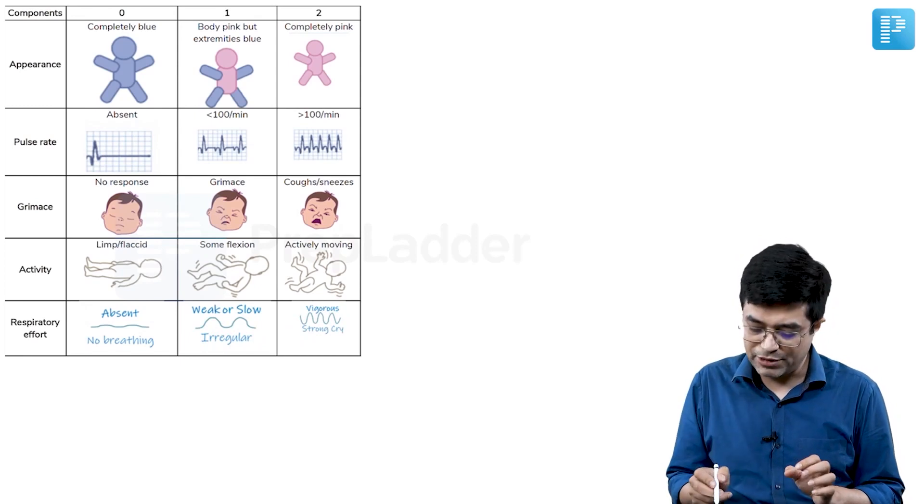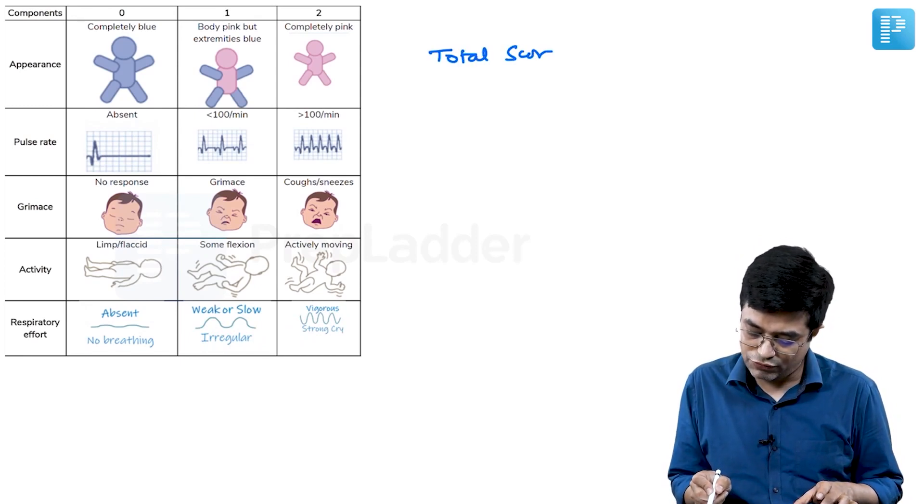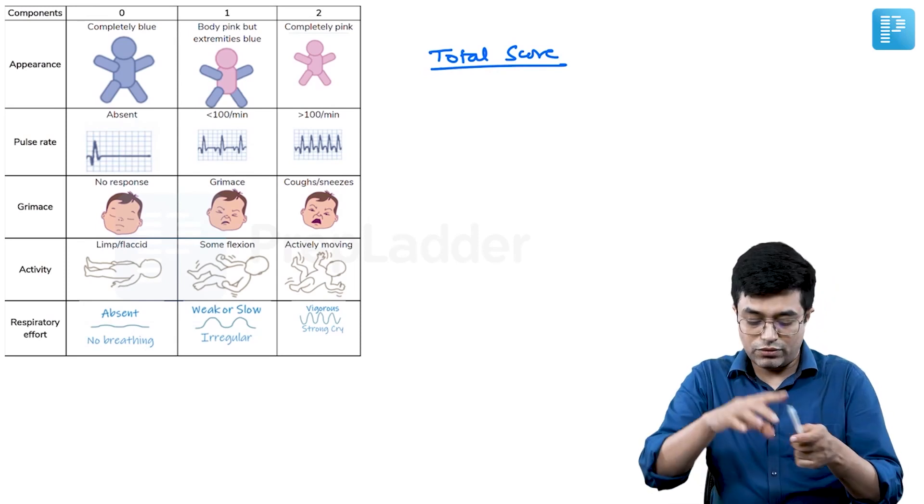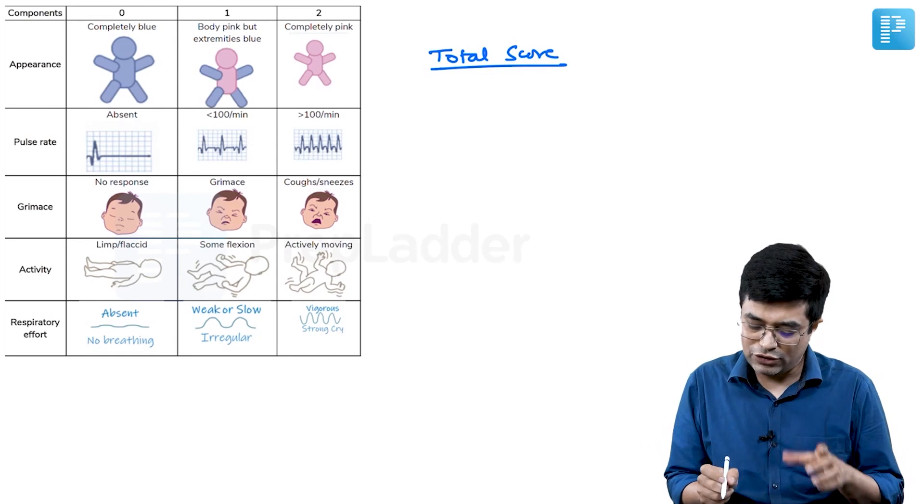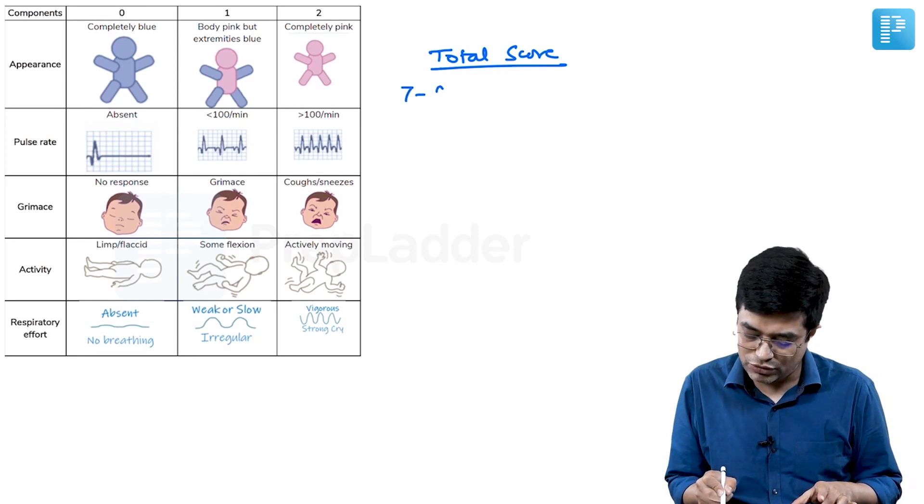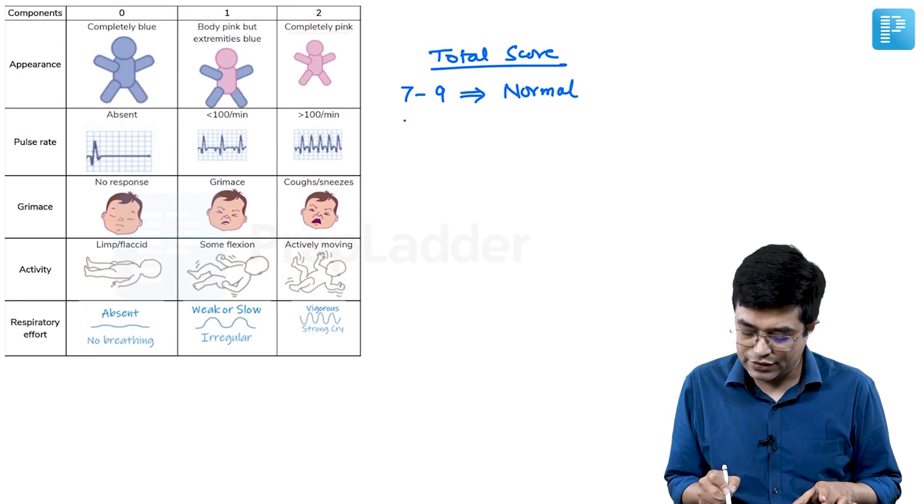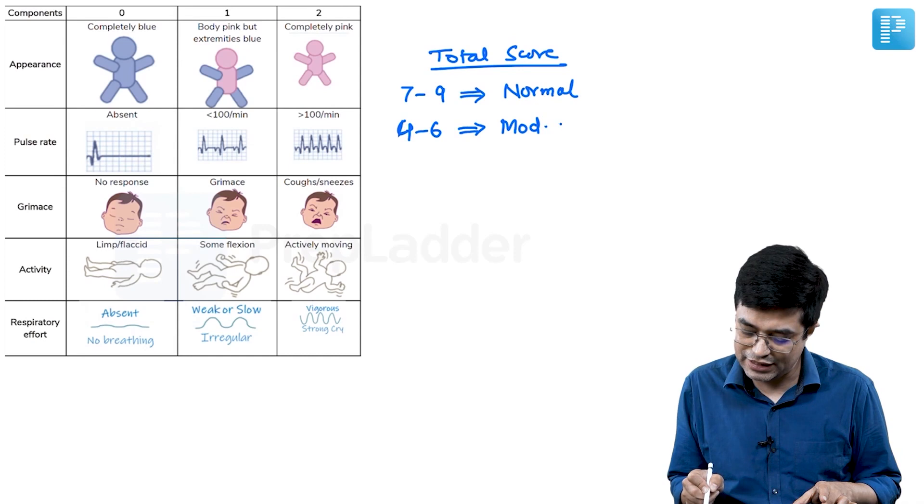So what is the interpretation of the score? Total score, if you find that it is between—you calculate for each component and then you make the total score. If the total score is between 7 to 9, that is considered to be a normal score. If the score, the APGAR score is between 4 to 6, we call it as moderately depressed. And if the score is 0 to 3, we call it as severely depressed.